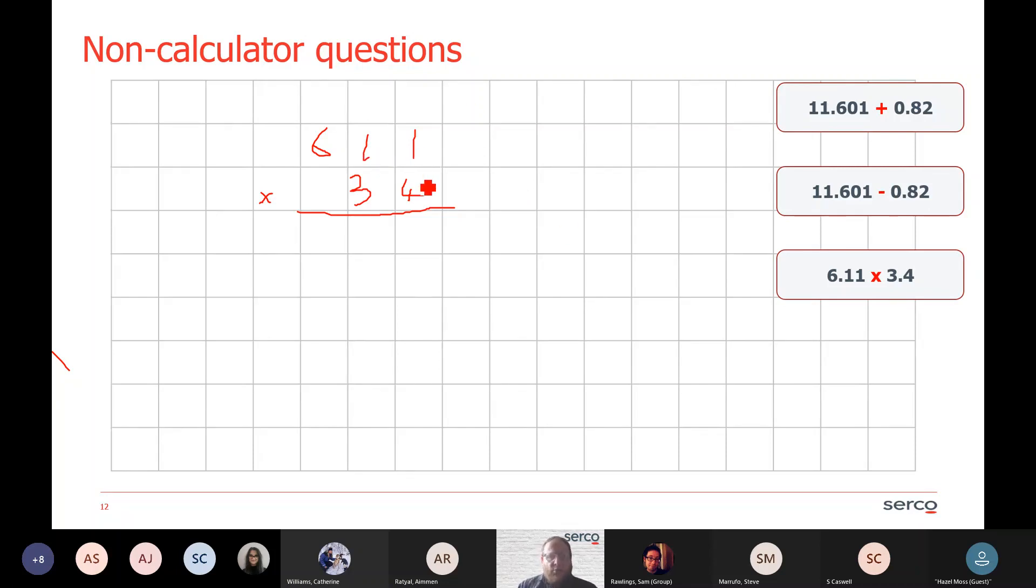The way I would do that with long multiplication: I would do 1 times 4 is 4, this 1 times 4 is also 4, and then 6 times 4 gives me 24. I would then multiply by the 3, which is in the tens, so I need to put 0 in my answer. 1 times 3 is 3, 1 times 3 is 3, and 6 times 3 is 18. Then I take those two numbers and add them together. I do 4 plus 0 is 4, 4 plus 3 is 7, 2 plus 8 is 10, and then I've got 1 plus 1 is 2. So my answer of 611 times 34 is 20,774.